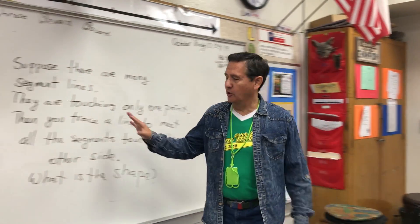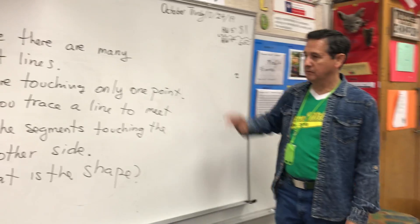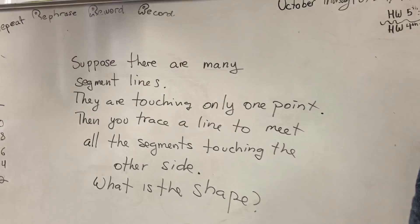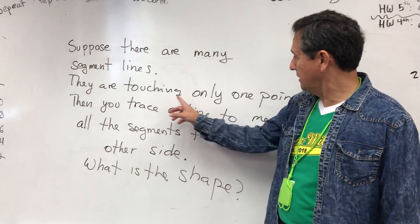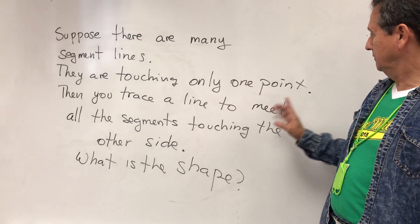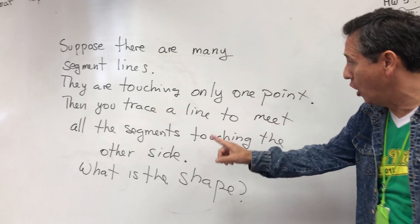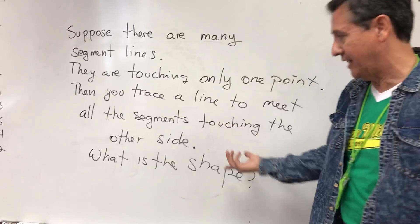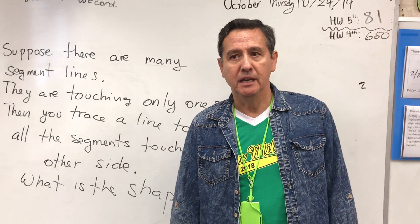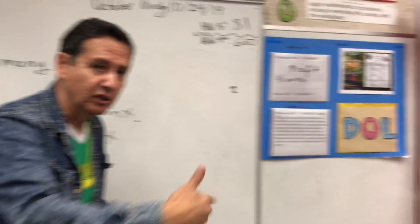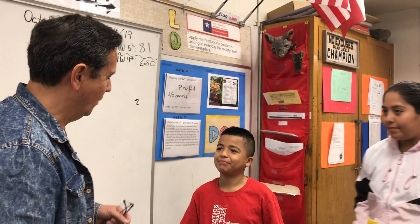Today we're trying to solve this question. Suppose there are many segment lines — they are touching only one point. Then you trace a line to meet all the segments, touching the other side of each segment. What shape is formed? Only three students in a large class got it — what's your answer?